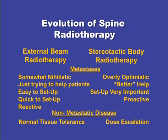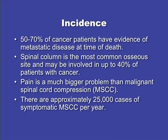We feel like we can do better, but this becomes a lot more complicated in the delivery. As Dr. Zang pointed out, there are indications for radiation. We're learning what normal tissue can tolerate, and the big difference evolving is that with more refined forms of radiotherapy we're able to do dose escalation. The incidence of metastatic disease happens in 5 to 70 percent of people with cancer. The spinal column is the most common osteolytic site, maybe up to 40 percent.